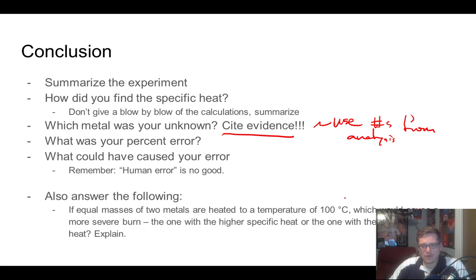And then I also want you to answer the following during the conclusion paragraph. So if equal masses of two metals are heated to a temperature of 100 degrees Celsius, which would cause a more severe burn, the one with higher specific heat or the one with lower specific heat? And I want you to explain that. So essentially just kind of, do you understand what specific heat is talking about? And just kind of answer that question. One or two sentences would be plenty.